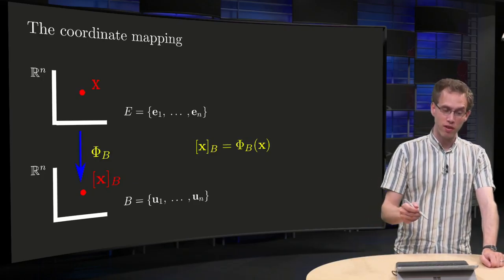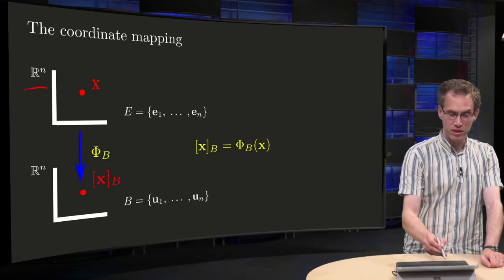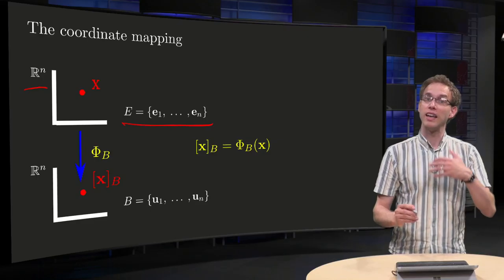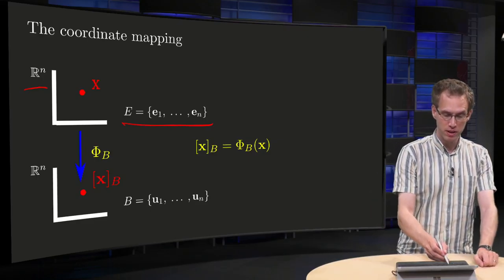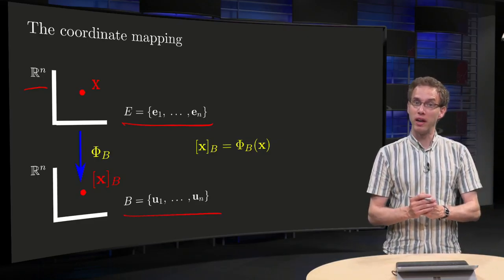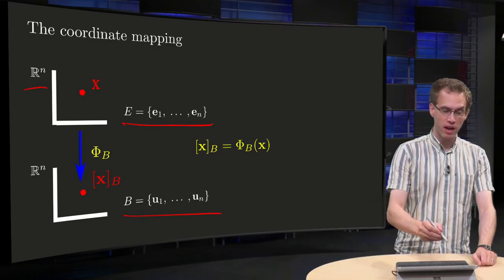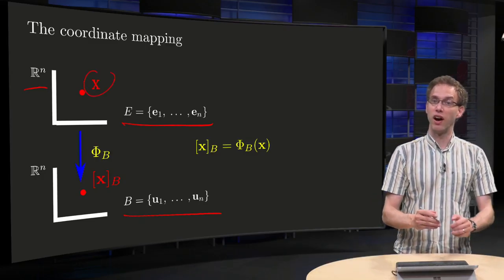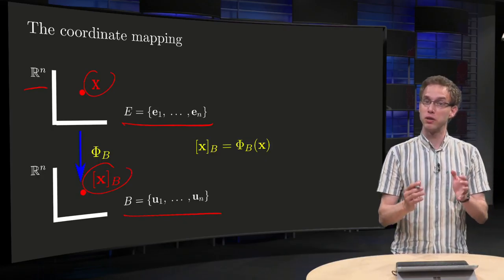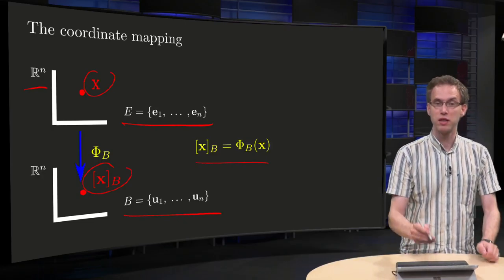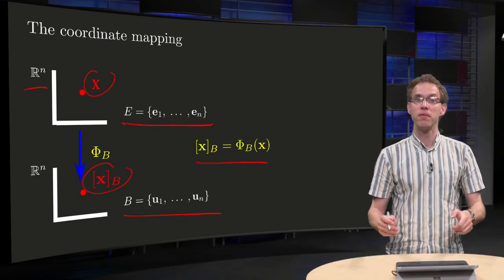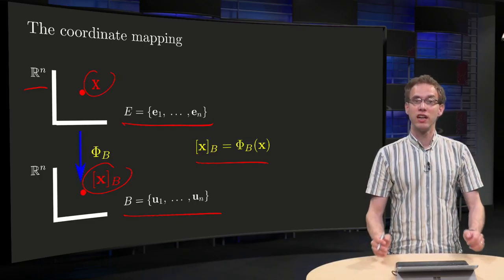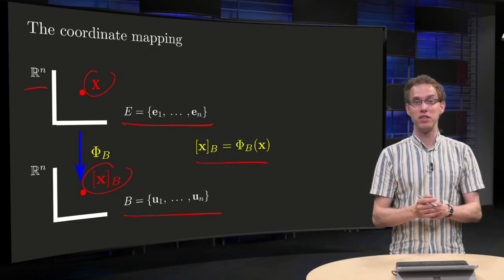So what is the setting? We have Rn with the standard basis, and then we have some different basis B, u1 up to un. And then we know every x in Rn is mapped to its coordinates vector xB by some mapping φB. xB is given by φB(x). And then the question is, can we find a matrix that implements this mapping?